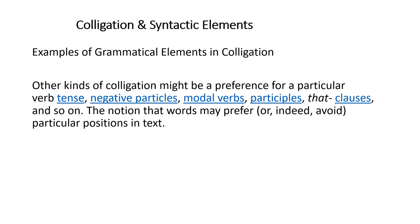The notion is that words may prefer or avoid particular positions in text. We sometimes prefer a sentence structure or want to avoid one that is not correct. For example, the sequence of a sentence is: subject, then verb, then object or complement. We want to avoid structures where this sequence is destroyed, and prefer accurate usage according to proper sentence structure.